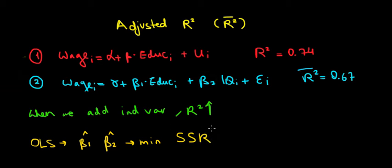By definition, if we have a coefficient different than zero—an actual effect of IQ on wage—that means OLS chose this coefficient to minimize the sum of squared residuals. This means when we go from model 1 to model 2, we have lower variation in the residuals, so a better fit of the data.